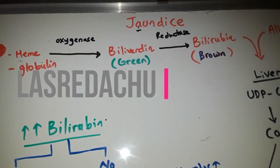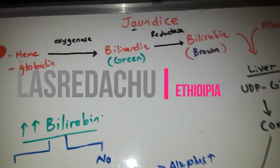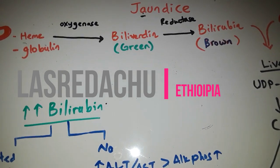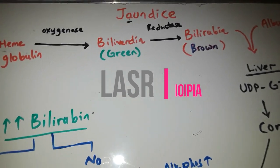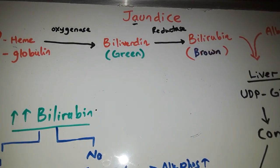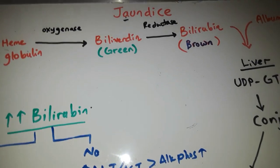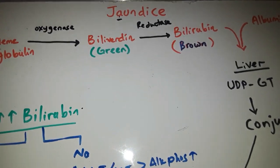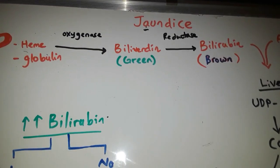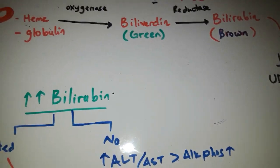My name is Jondis. Jaundice is a yellowish discoloration of the mucous membranes, the skin, or the sclera. Jaundice is very important because it involves the mucous membranes.